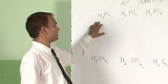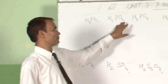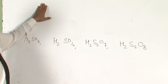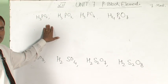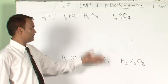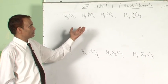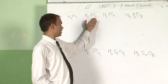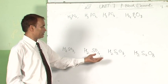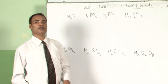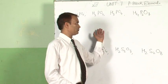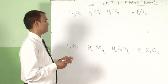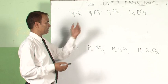Now, the structure of the oxoacids of phosphorus and oxoacids of sulfur — not only the structure is asked, but the acidic strengths are also asked. We can explain on the basis of the oxidation state of phosphorus in oxoacids of phosphorus, and the oxidation state of sulfur, and also on the basis of structure. First, I am going to draw these structures.